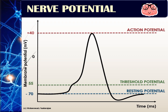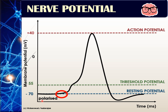Looking at the graph again: the part showing negative 70 millivolts is when the nerve is not transmitting an impulse — it is at rest. Because it is at a negative value, we consider the nerve to be polarized. When an impulse is received, the nerve starts to change its potential from negative 70, becoming less negative up to negative 55.